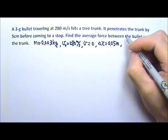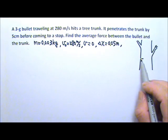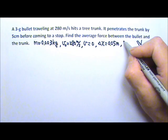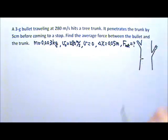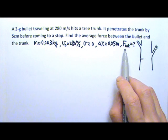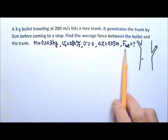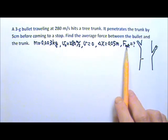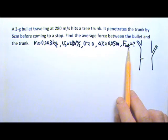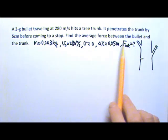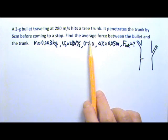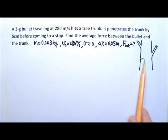What we want to find is the force between the trunk and the bullet — specifically the net force on the bullet, which is the force that stops it. There are different ways to solve this problem. We want the force and we have mass, so we can find the acceleration first and then use F = ma. Since this is the average force, we can treat the bullet's motion as constant acceleration motion, where that constant acceleration is the average acceleration.